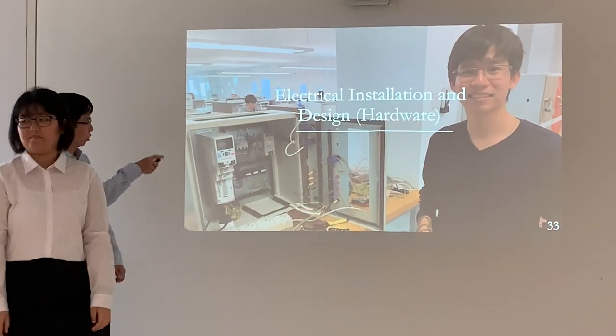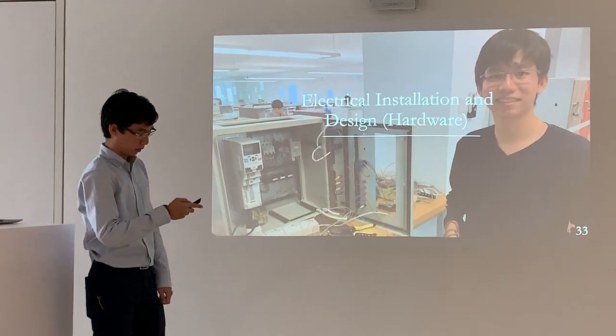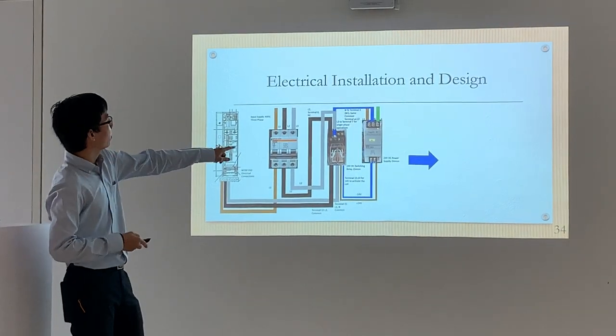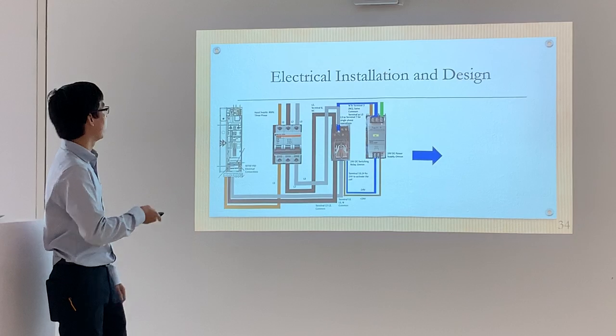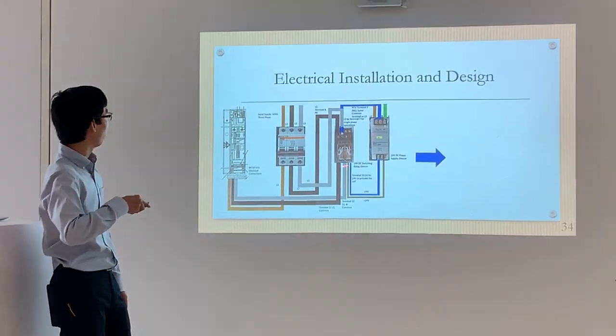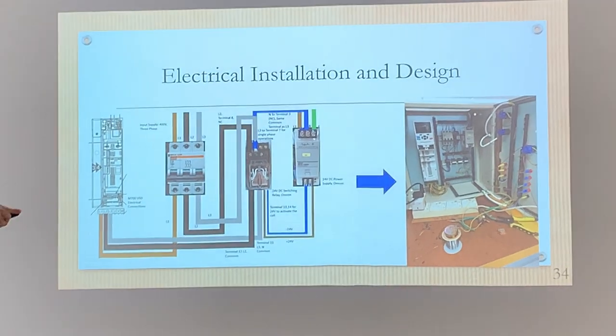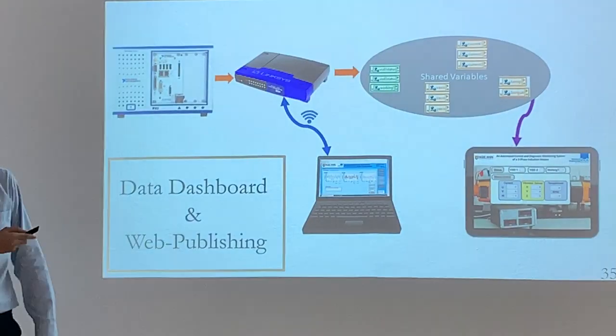This is the picture background for the variable speed drive three-phase installation wiring diagram. Inside we have a circuit breaker, a DC switching relay for switching between single-phase and three-phase, and a DC power supply to power up the VSD. The end product will be the actual wiring diagram of the three-phase VSD here. I'll hand back to Lina.